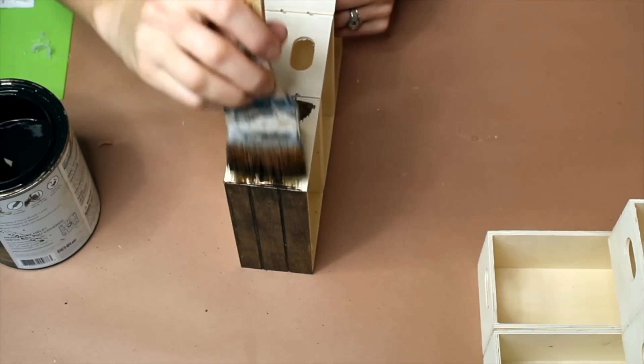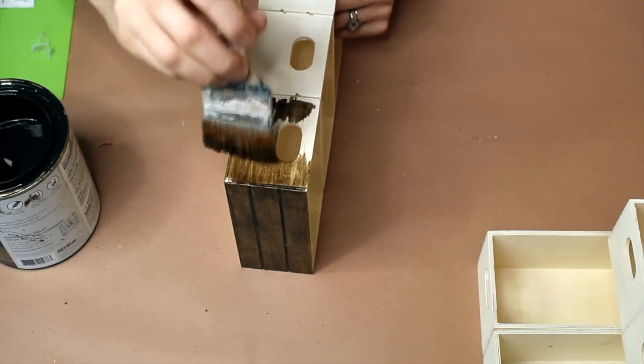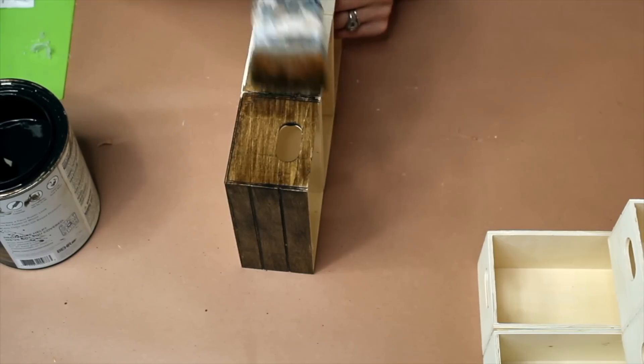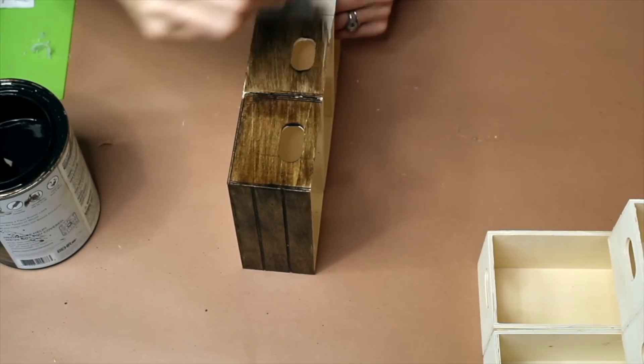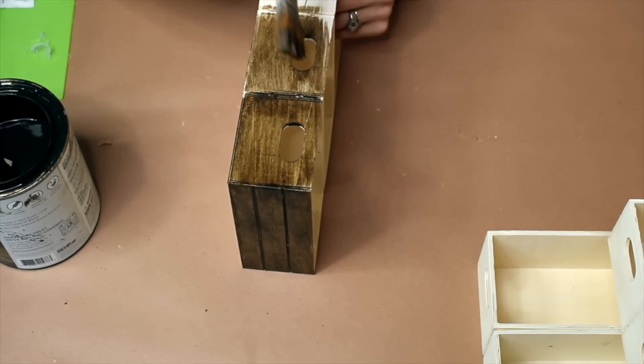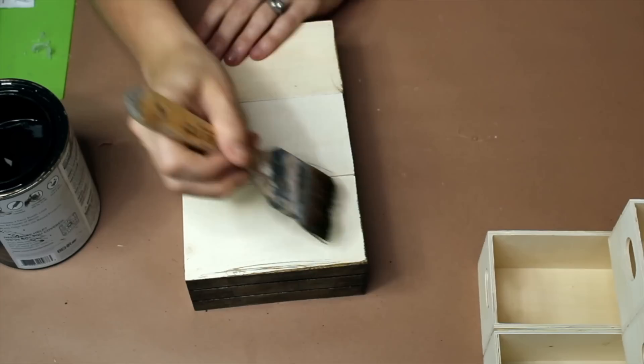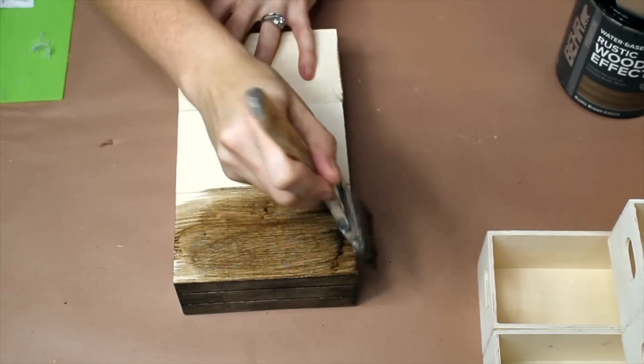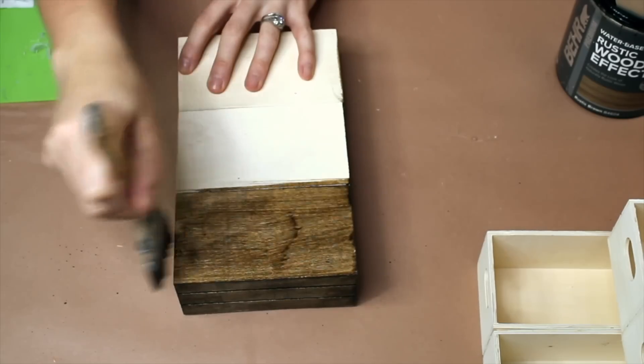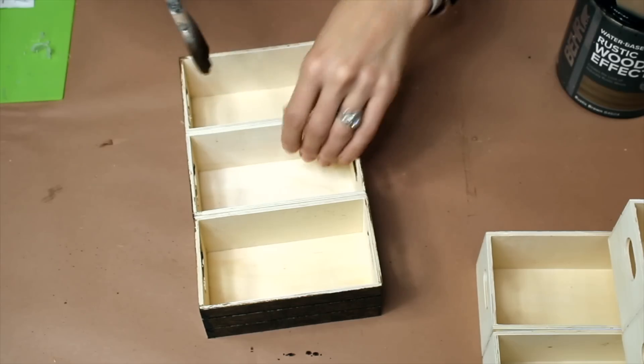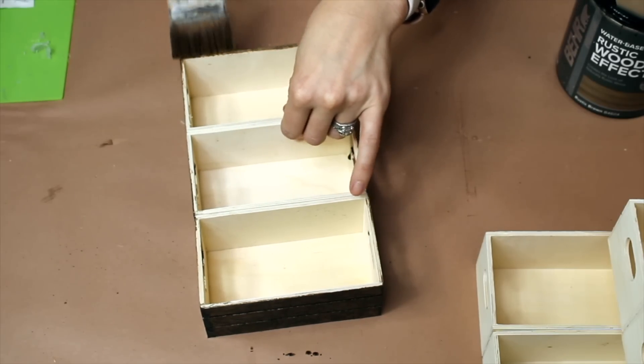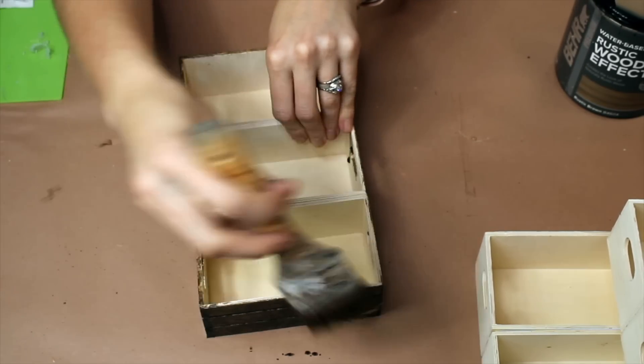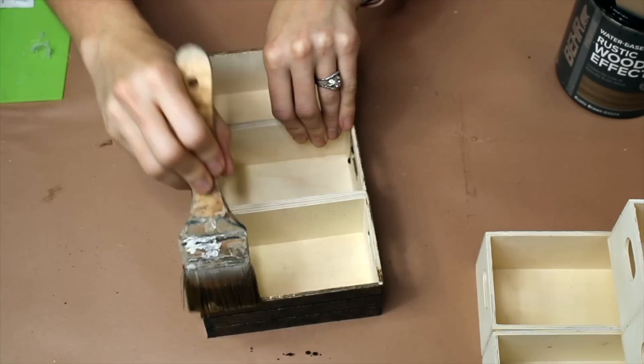One of the things I like about using water-based stain is you don't necessarily have to wear gloves for it and you also don't have to worry about a chemical smell or doing it outside. You also don't have to worry about a significant amount of dry time. So you'll want to make sure you're applying this with the wood grain. We're just going to continue moving around and covering every inch of these crates that are assembled together.